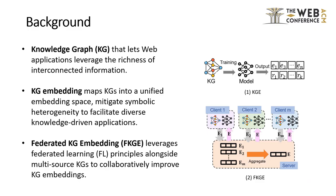A knowledge graph is a structured knowledge base that describes real-world entities and their relationships through triples, and lets web applications leverage the richness of interconnected information. To mitigate symbolic heterogeneity of knowledge graphs, KGE embedding maps the representation of structured information into a unified embedding space.